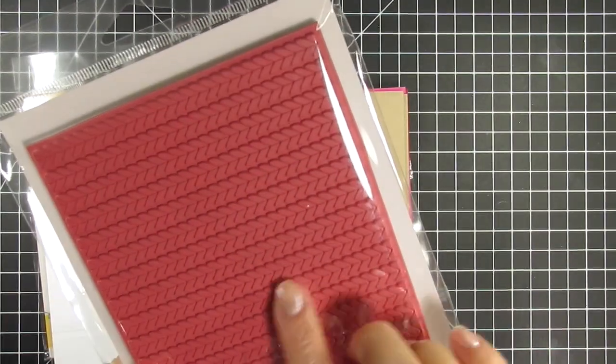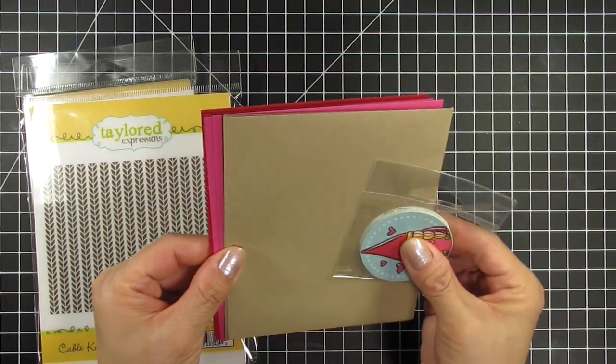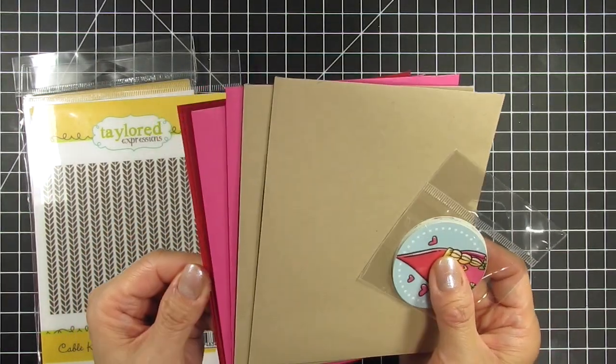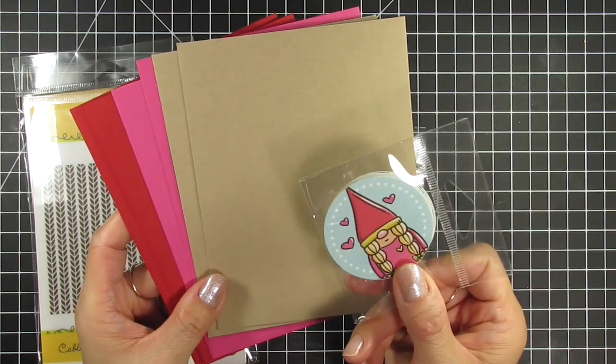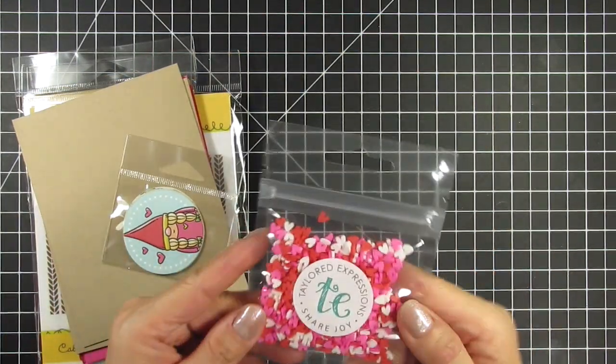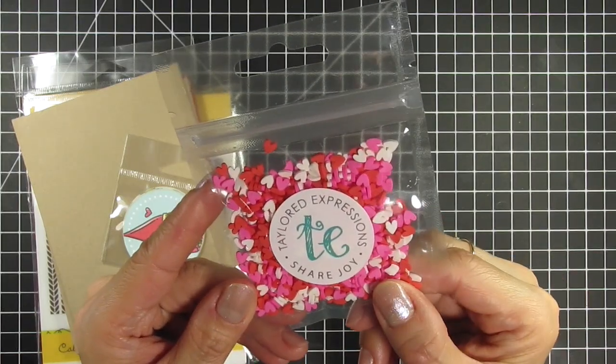This kit also comes with six envelopes in a love themed assortment and you also get six envelope seals with three of each gnome. There's also an assortment of candy hearts in red, pink, and white. These are super cute and actually look edible.